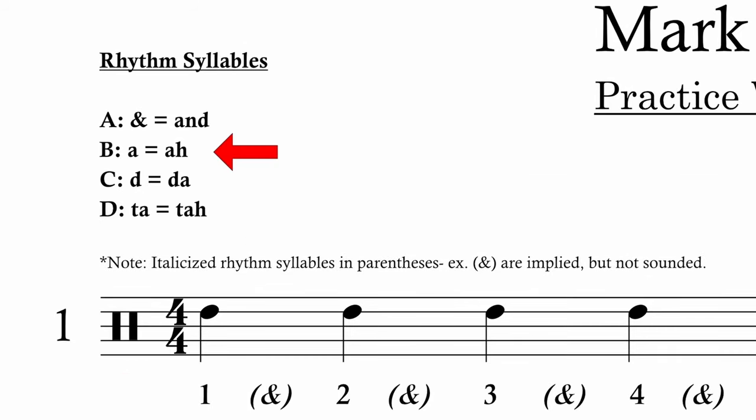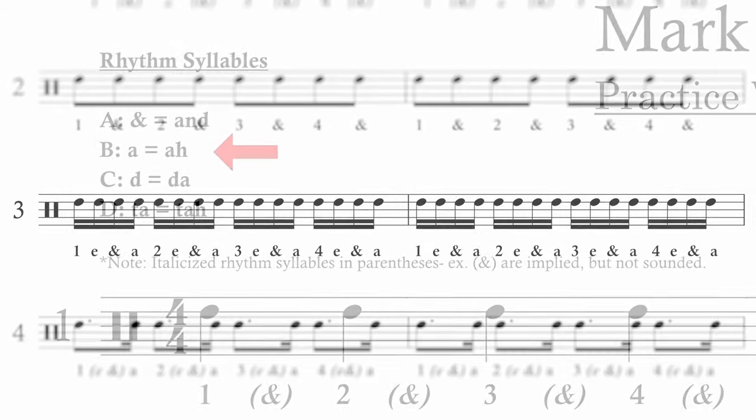The second one is letter B — A equals A. If you look down to the third line, you see the sixteenth notes. We see one E AND A. We're going to say it: one E AND A, two E AND A, three E AND A, four E AND A.